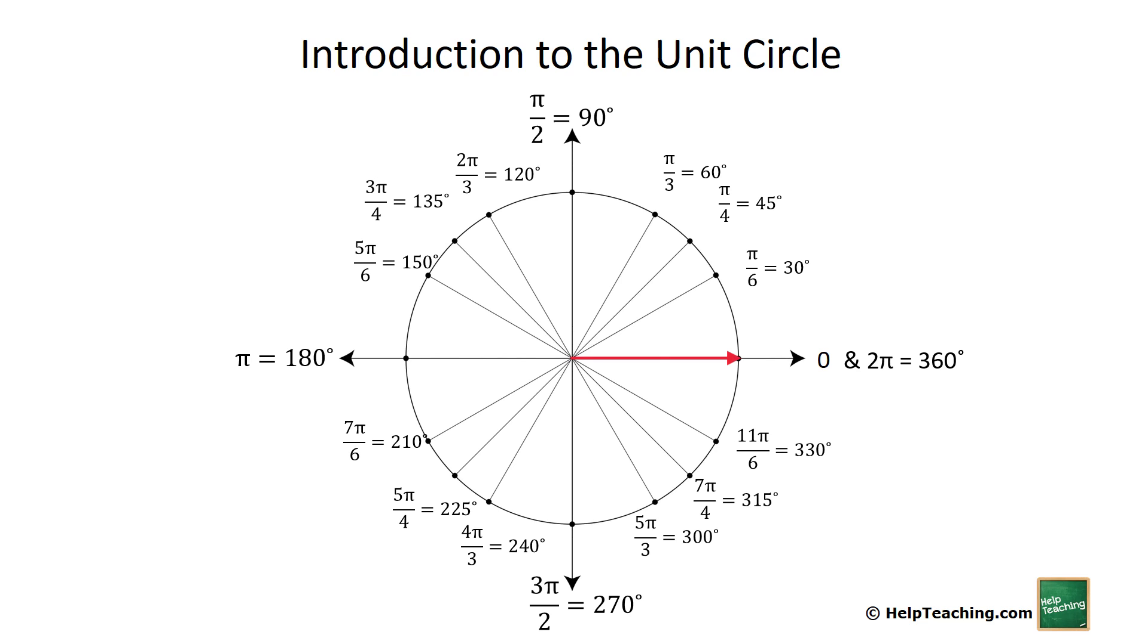Again, it might look a little confusing because we have some numbers like pi over three. But if you just remember that's the same as two pi over six, then all of your 30 and 60 degree angles work out really nicely. Let's look at some examples.